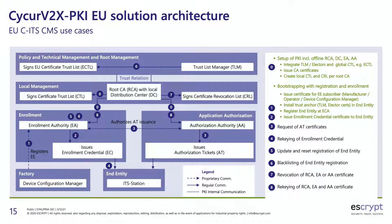Bootstrapping with registration and enrollment means issuing certificates for the end entity, subscriber, manufacturer, operator, and device configuration manager — installing the trust anchor, TLM certificates, and elector certs in the European standard, and elector certs in the North American standard as outlined in the IEEE 1609.2.1 draft published in January 2021. Enrollment certs enable the end entity to communicate with the back end to download pseudonym certs, application certs, identity certs, or other certs depending on use case and region.